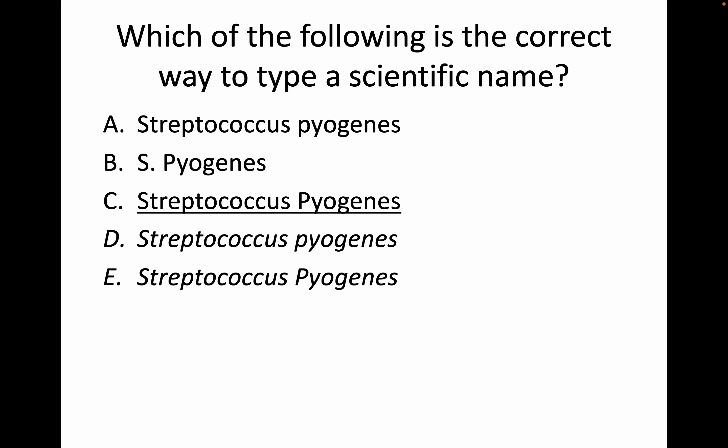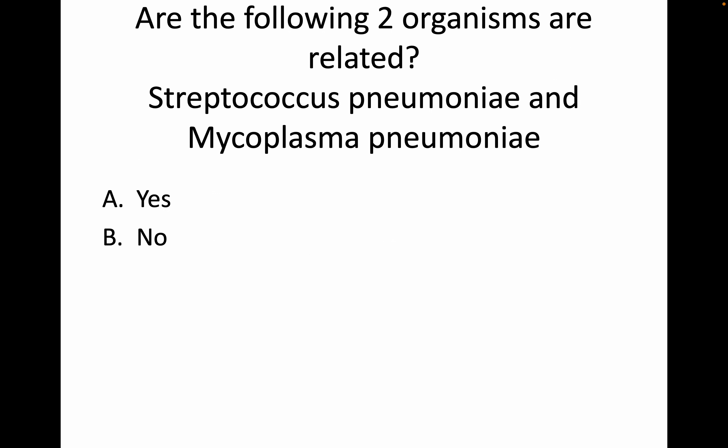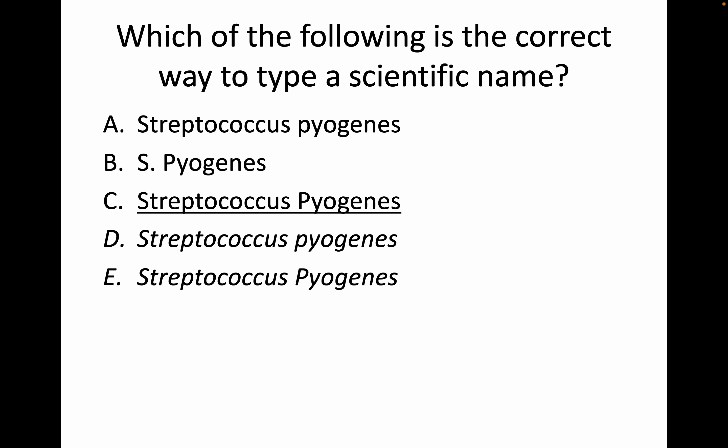Which of the following is the correct way to type a scientific name? The answer is D — because the genus is capitalized but not the species, and it's all in italics.